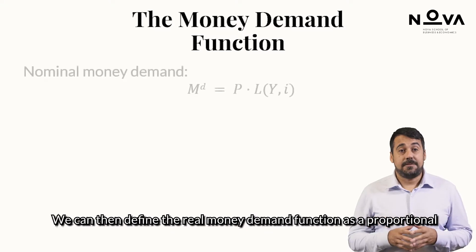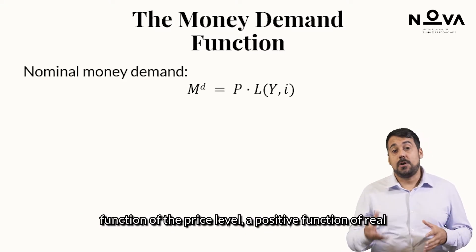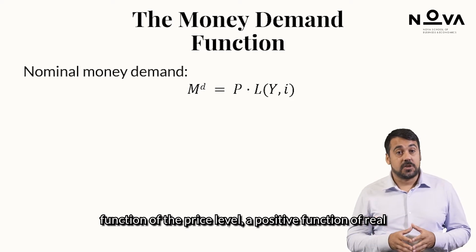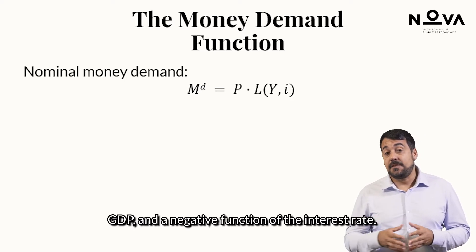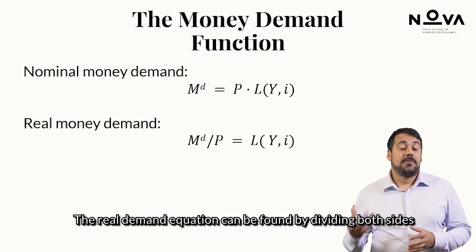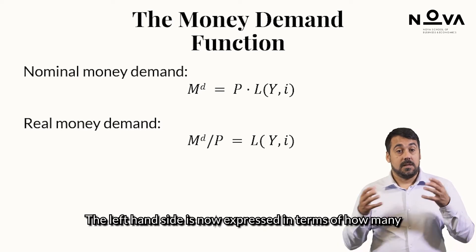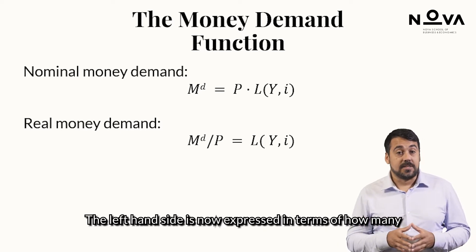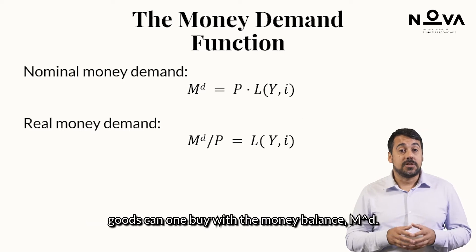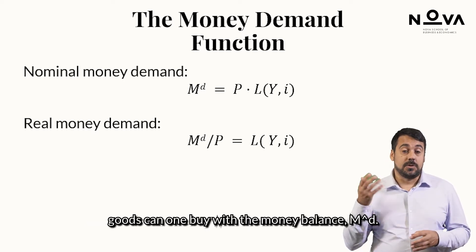We can then define the real money demand function as a proportional function of the price level, a positive function of real GDP, and a negative function of the interest rate. The real demand equation can be found by dividing both sides of the equation by the price level. The left-hand side is now expressed in terms of how many goods can one buy with the money balances M superscript D.